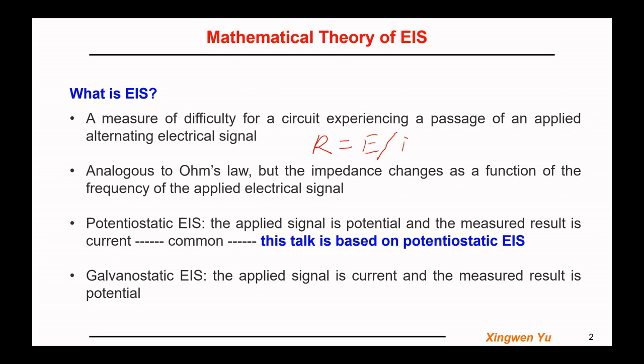Another type of EIS is the galvanostatic EIS, where the applied signal is current and the measured result is potential.